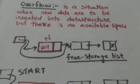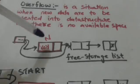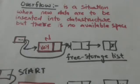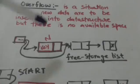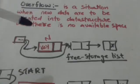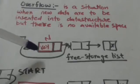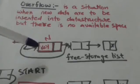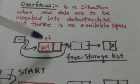If the free storage list is not empty, its first node is removed. The information key is copied into this node, and this node is called node N.